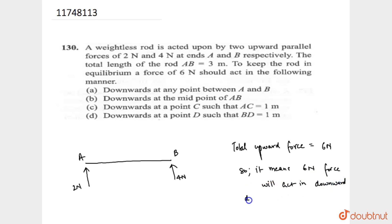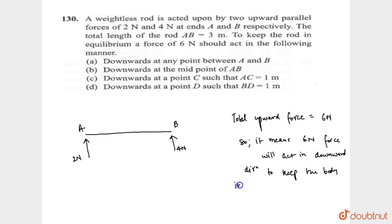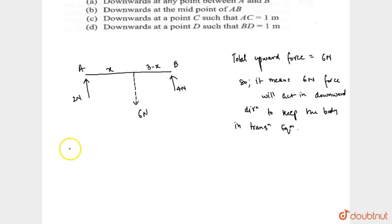What do we have to say? Downward direction to keep the body in translation equilibrium. Six Newton force in downward direction. This is 6 Newton, this is 3 minus x.